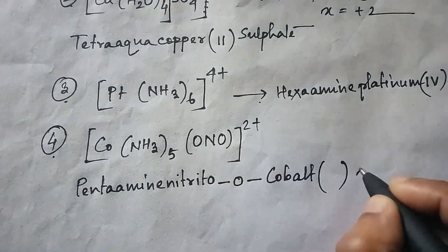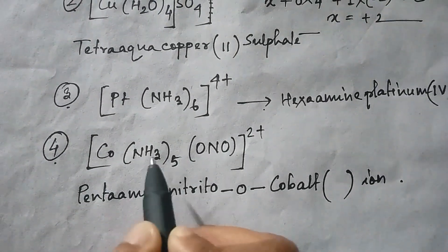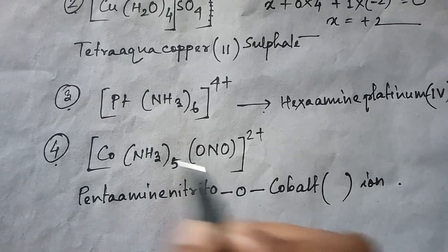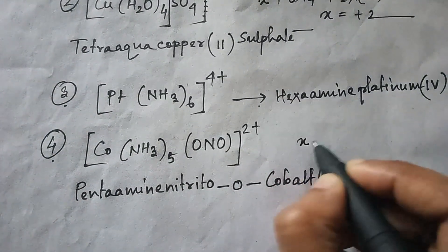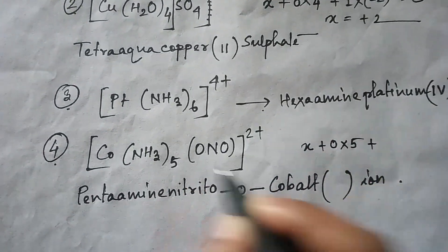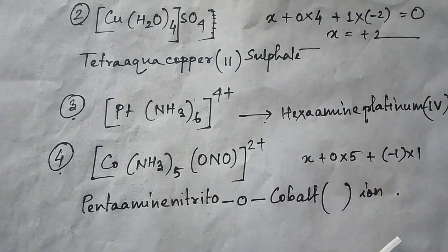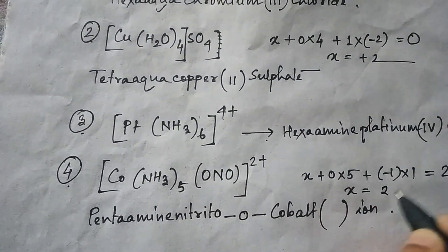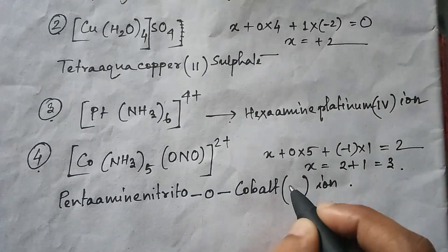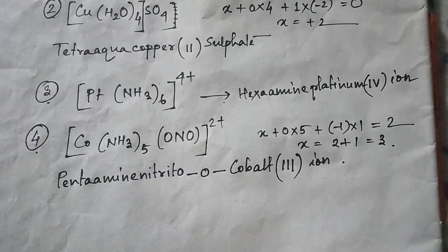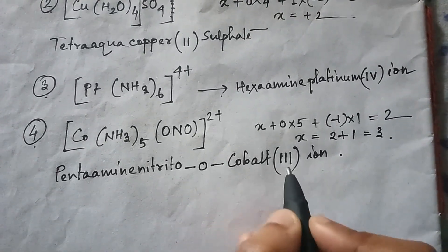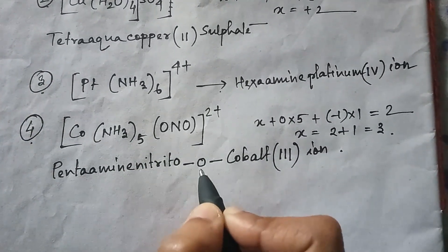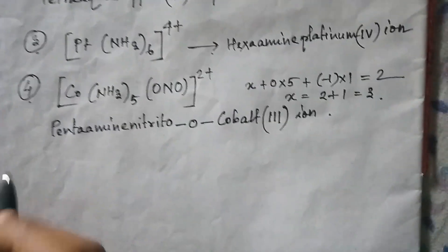Now find the oxidation state of cobalt. Ammonia is neutral (0), and ONO is anionic with a −1 charge. Let cobalt be X: X + 0×5 + (−1)×1 = +2, so X = +3. Write Roman numeral III. The full name is pentaaminenitrto-O-cobalt(III) ion. The 'O' is included because the ONO group is attached to cobalt through oxygen.